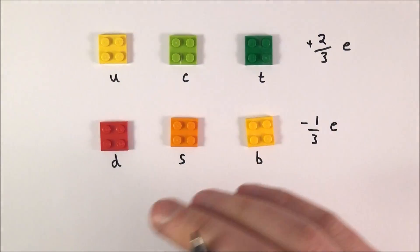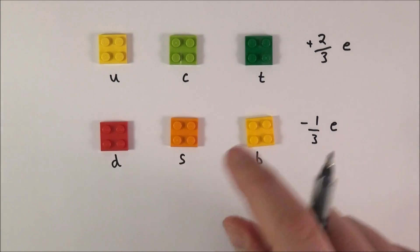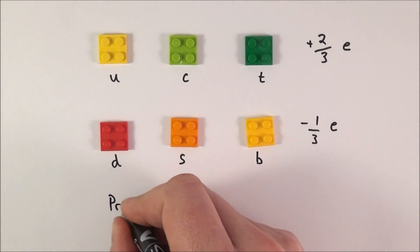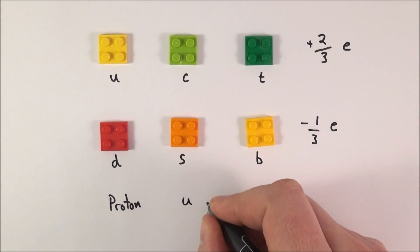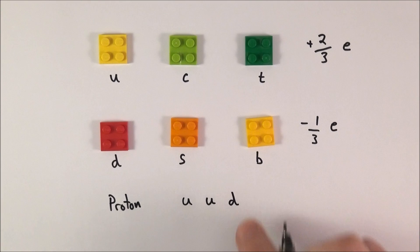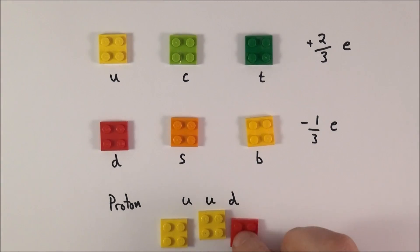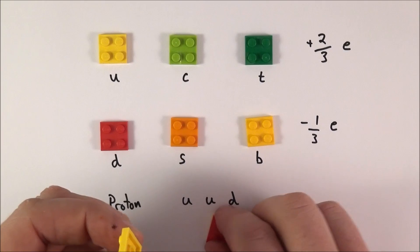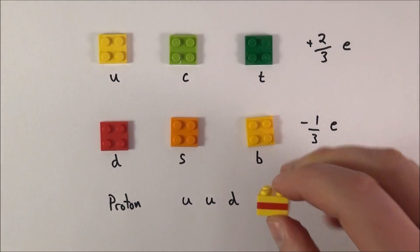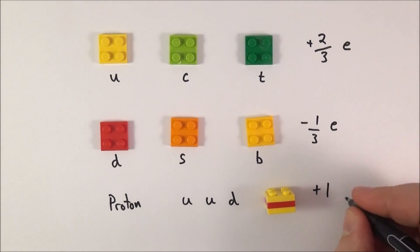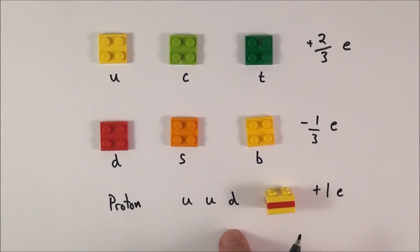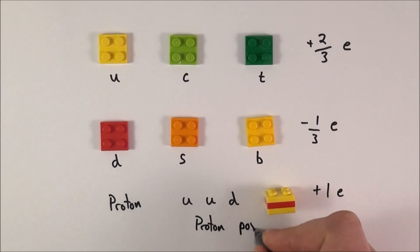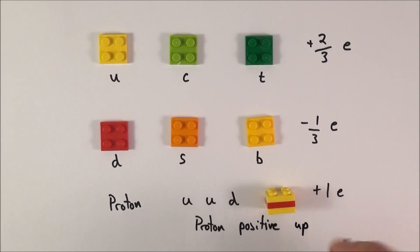A baryon is made out of three quarks. For example, a proton is made out of an up quark, an up quark, and a down quark. The overall charge on a proton is plus two-thirds plus two-thirds minus one-third, which equals plus one of the elementary charge. A memory tip: if you think of a proton as being very positive, it's more up than down, and therefore it's positive.